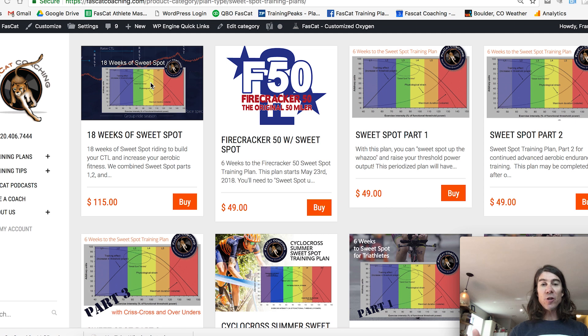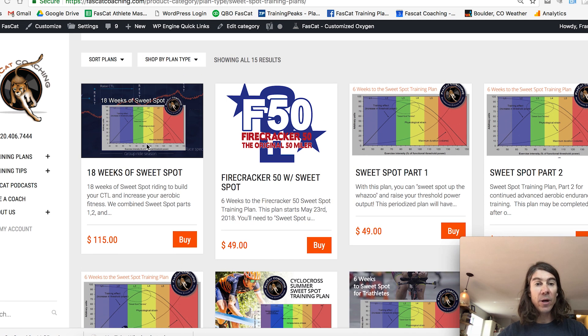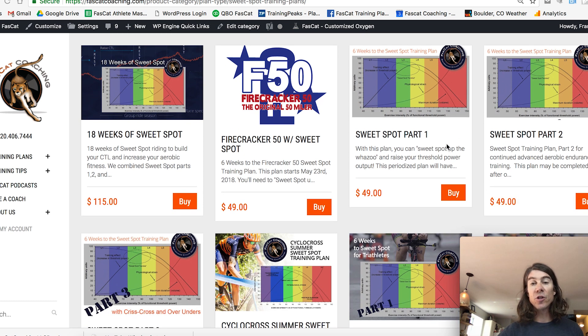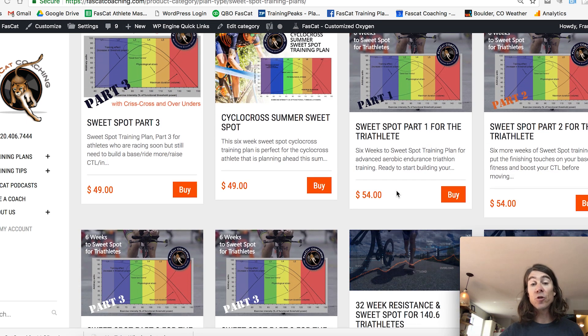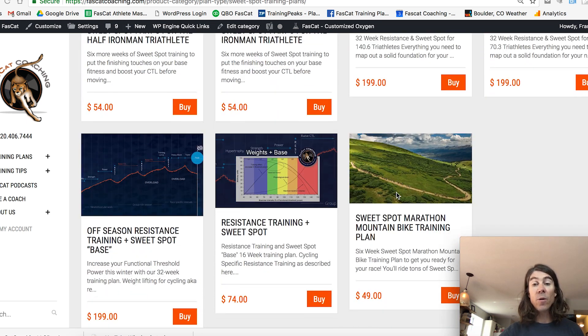To give sweet spot training a try, you can browse our website under our training plans. We have an 18 weeks of sweet spot training plan that incorporates version sweet spots one, two, and three. We have sweet spot for the cyclocrosser. We have sweet spot for the triathlete. And we have sweet spot for marathon mountain biking, which is very specific to the marathon races.